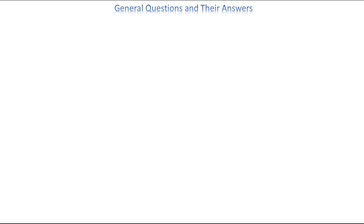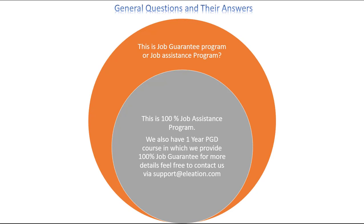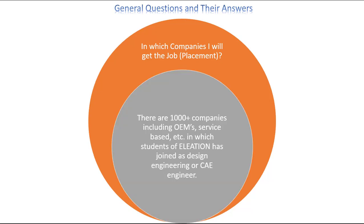Now I will answer some general questions. Is this a job guarantee or job assistance program? This is a 100% job assistance program. We also have a one-year post-graduation diploma course with 100% job guarantee — for more details, contact support@eleation.com. There are 1,000-plus companies which are clients or connections of Eleation, including OEMs, service-based companies, tier 1, tier 2, tier 3 suppliers. You can visit LinkedIn and search hashtag Eleation for more information.